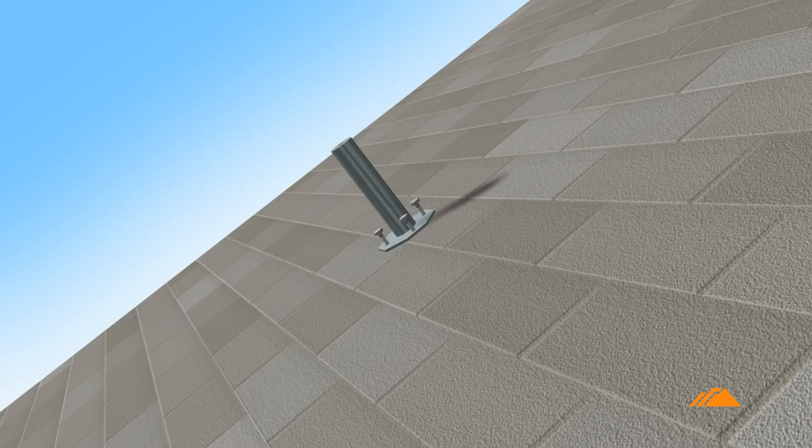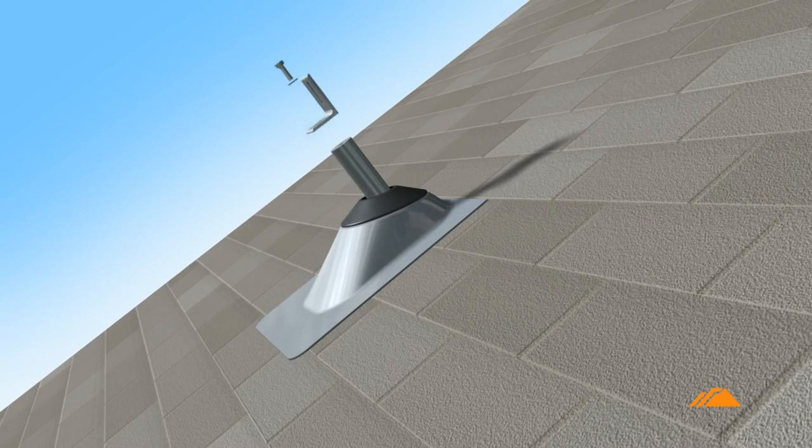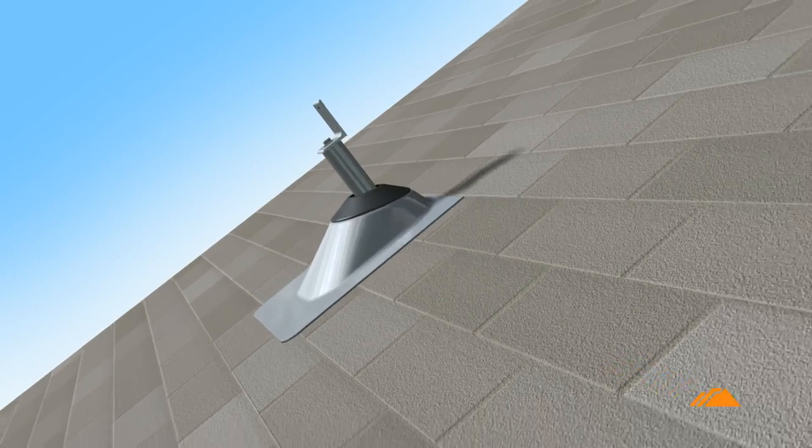To install the Iron Ridge Integrated Grounding System, first install roof flashings and L-feet.